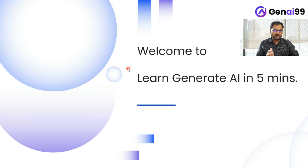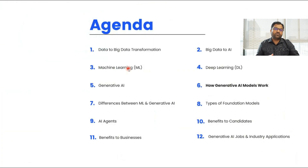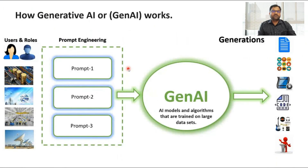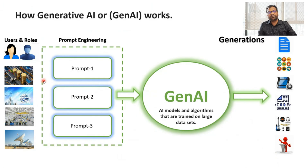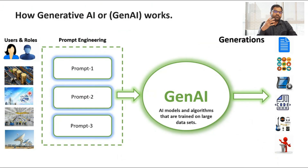Welcome back to Learn Generative AI in Five Minutes. Today we talk about how a generative AI model works. Here you will find users and roles in multiple domains — be it a banking domain, insurance domain, manufacturing domain, or any kind of domain. People, meaning users and roles, will have a lot of doubts, questions, issues, and concerns that they should be able to solve.